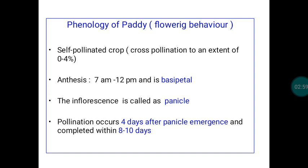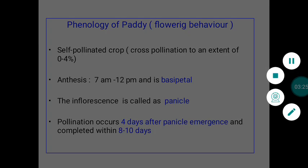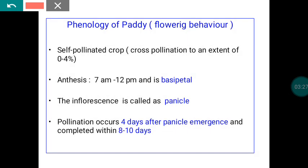The seed crop here is paddy, which is a self-pollinated crop. The extent of cross-pollination is zero to four percent. The first opening of the flower normally occurs between 7 a.m. and 12 p.m. The flower opening follows a basipetal nature, meaning the topmost flower in the panicle opens first and then proceeds downward.